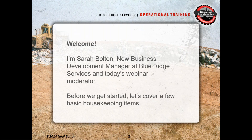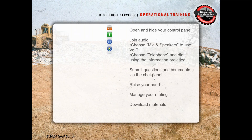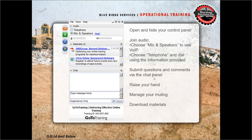Before we get started, I wanted to cover a couple of quick technical and housekeeping items. When you logged in to GoToMeeting, you should have seen a control panel. If you don't see the full control panel, you can click the little orange arrow and it should expand the full control panel out.